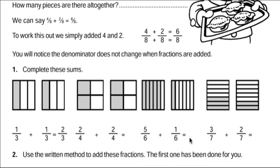Again, the same as 1 whole. Here, 3 parts out of 7, plus 2 parts out of 7. 3 plus 2 is 5 parts out of 7.